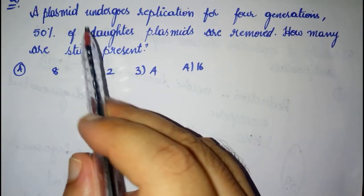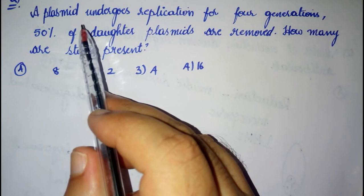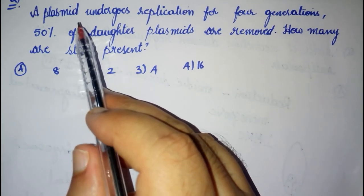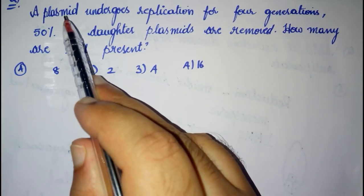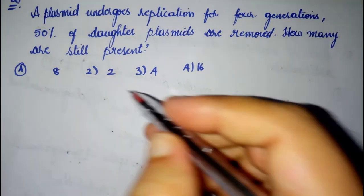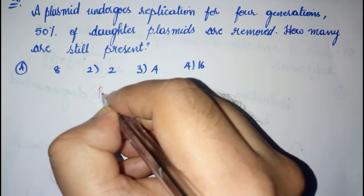Hello guys, good morning. In our numerical botany series, we have one more question. Here's the question: a plasmid undergoes replication for four generations, and 50 percent of daughter plasmids are removed. How many are still present?